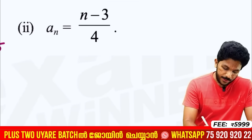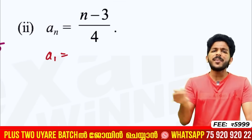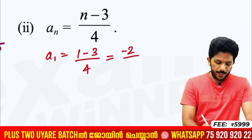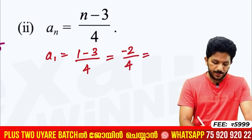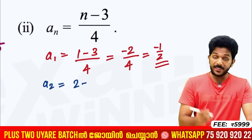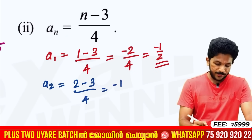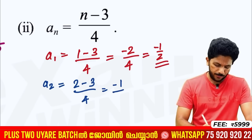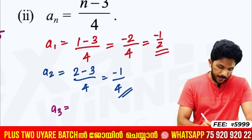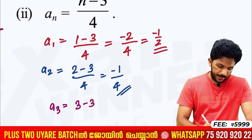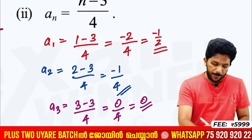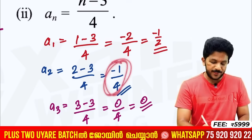A1 is equal to 1 minus 3 divided by 4. 1 minus 3 is equal to minus 2, divided by 4, which gives minus 1 by 2. A2 is equal to 2 minus 3 by 4, so 2 minus 3 is minus 1, giving minus 1 by 4. A3 is equal to 3 minus 3 divided by 4, which is 0 by 4. Zero divided by any number is 0. So the three terms are minus 1 by 2, minus 1 by 4, and 0.